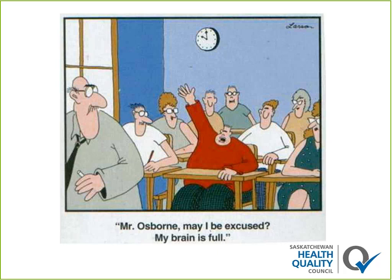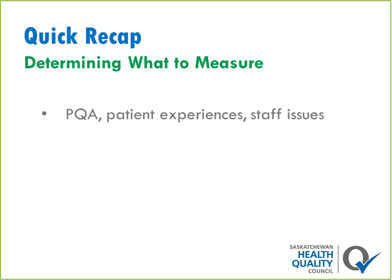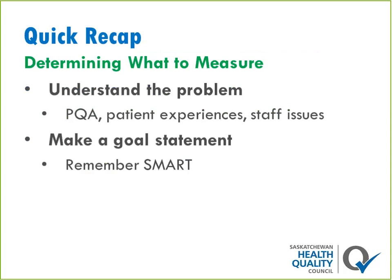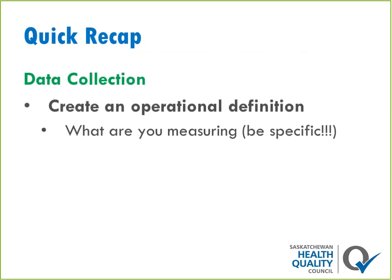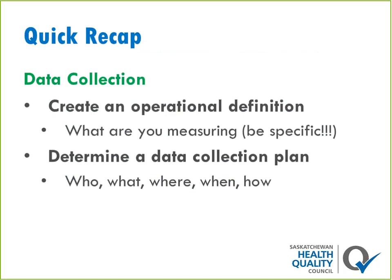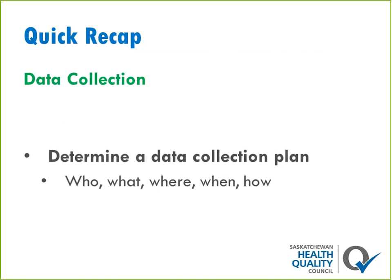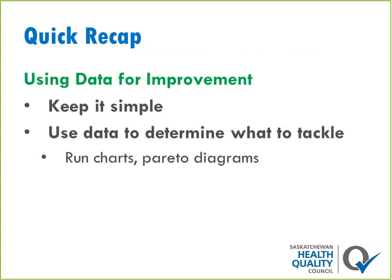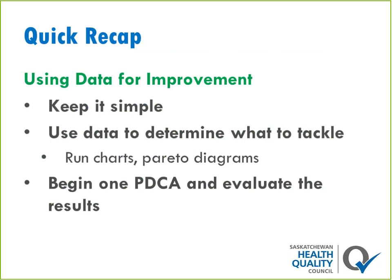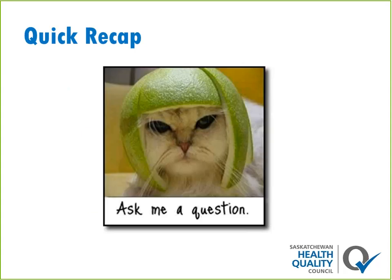Quick recap of the basics of each step. Determining what to measure: understand the problem — know your PQA, patient experience, and staff issues. Make a SMART goal statement: specific, measurable, aspirational, relevant, and timely. Think through outcome, process, and balancing measures and involve everyone you can. For data collection: create an operational definition, determine the data collection plan — the who, what, where, when, and how — then actually just go do it. For using data for improvement: keep it simple. Use data to determine what to tackle. Use what type of chart makes the most sense to tell your story. Begin one PDCA and evaluate results. Use that to continuously improve.